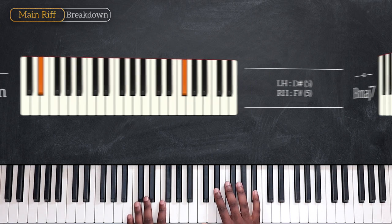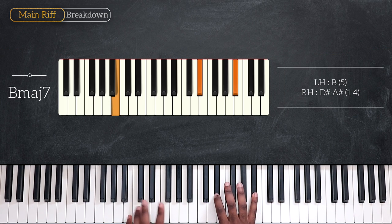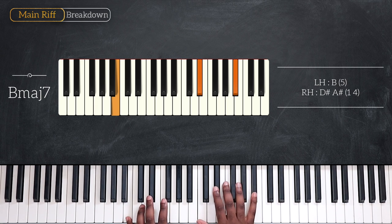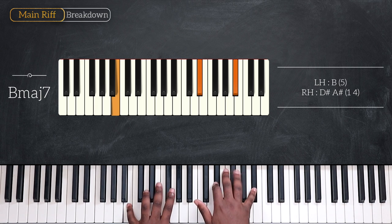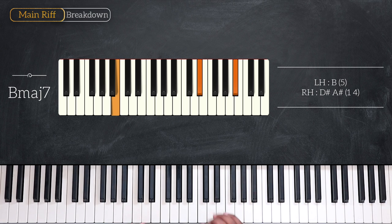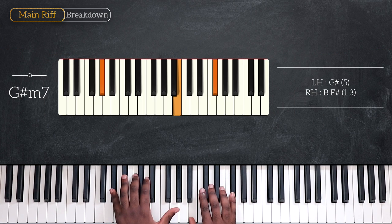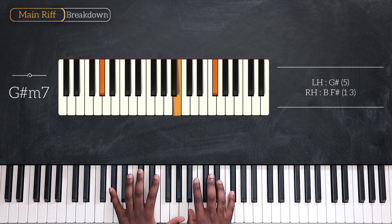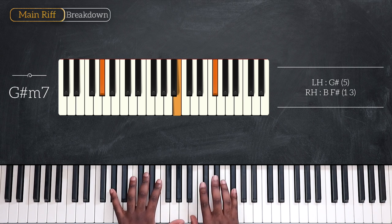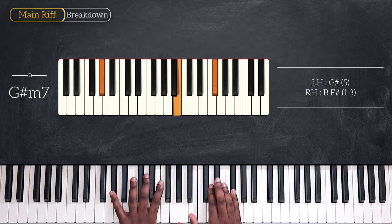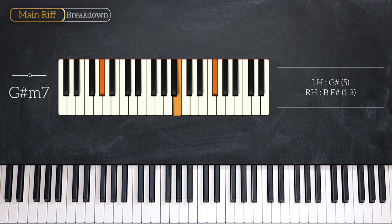Then we have B major 7, playing B, D sharp and A sharp, followed by G sharp minor 7. G sharp, B and F sharp, going up on the 5 chord.